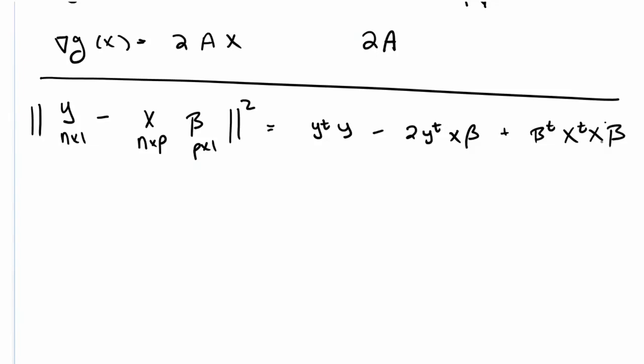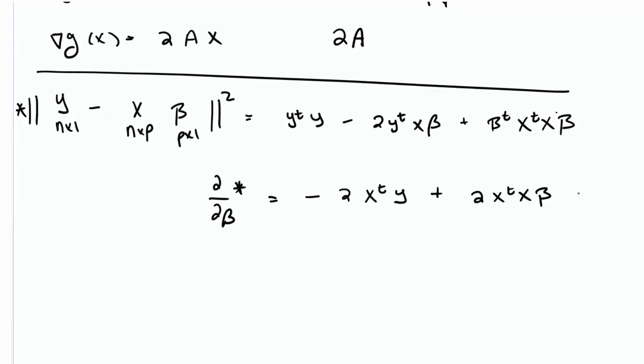If I were to expand this minimized distance out, I would get y transpose y minus 2y transpose X β plus β transpose X transpose X β. Using our results above, if we were to take a derivative of this function with respect to β,